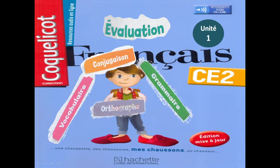Alors, en grammaire, on a vu la phrase et sa ponctuation. Qu'est-ce qu'on met à la fin de la phrase ? Quel type de ponctuation, quel type de point ? Et en conjugaison, on a vu les temps : passé, présent, futur. On a lié chaque temps de conjugaison à ces époques-là. Au passé, on y trouve le passé composé et l'imparfait que vous avez vu au CE1. Au présent, on a vu le présent simple, et à l'époque du futur, on a vu le futur simple.